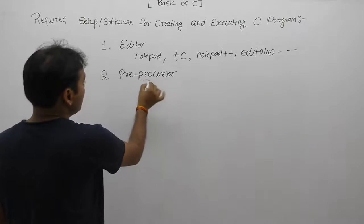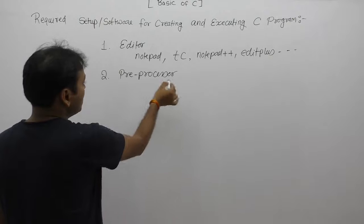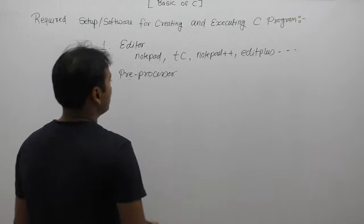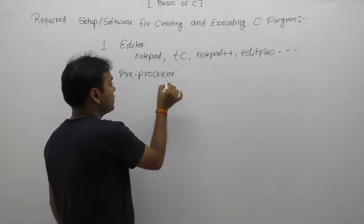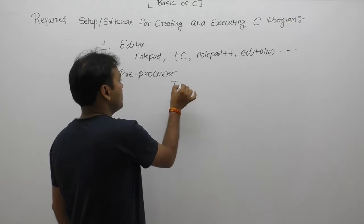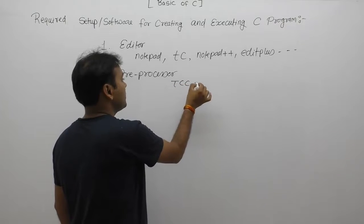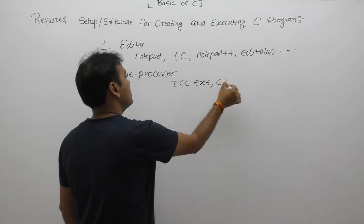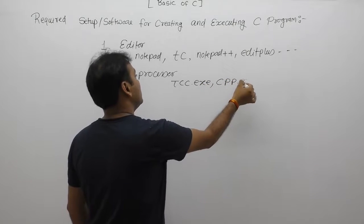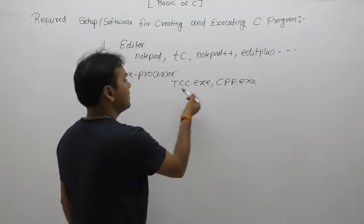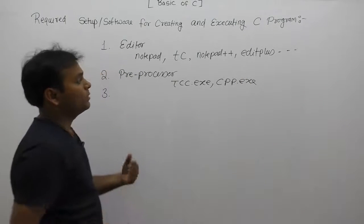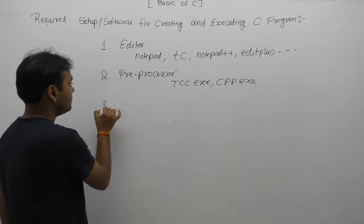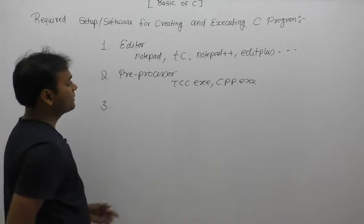Preprocessor software may have different names depending on the system. In the case of Turbo C, the preprocessor is supplied in the form of tcc.exe as well as cpp.exe. We will discuss what these exe files are and how to work with them in the next video.